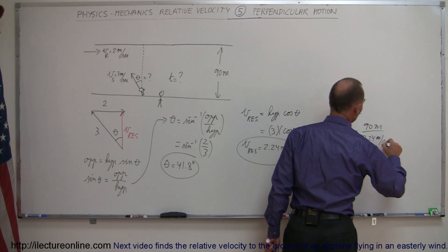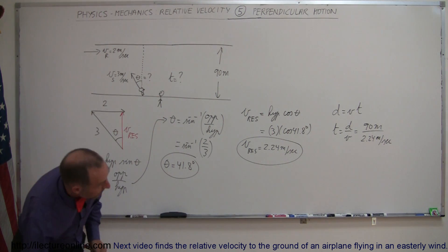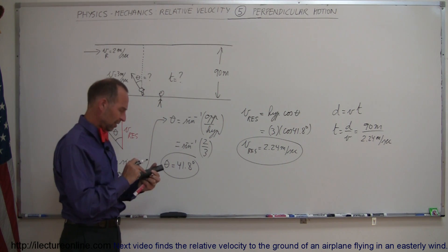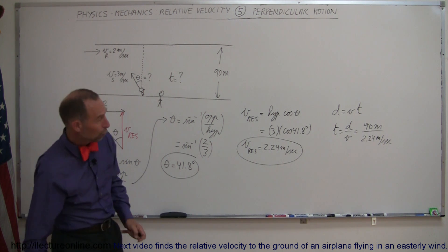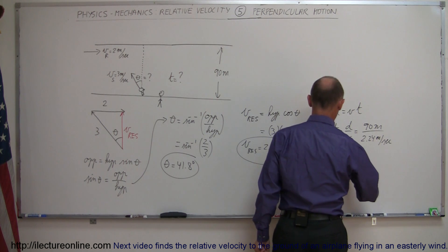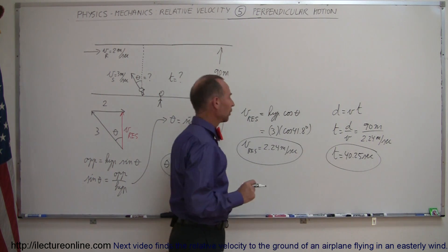And so we take the inverse of that, multiply it times 90, and we get 40.25 seconds. So time equals 40.25 seconds.